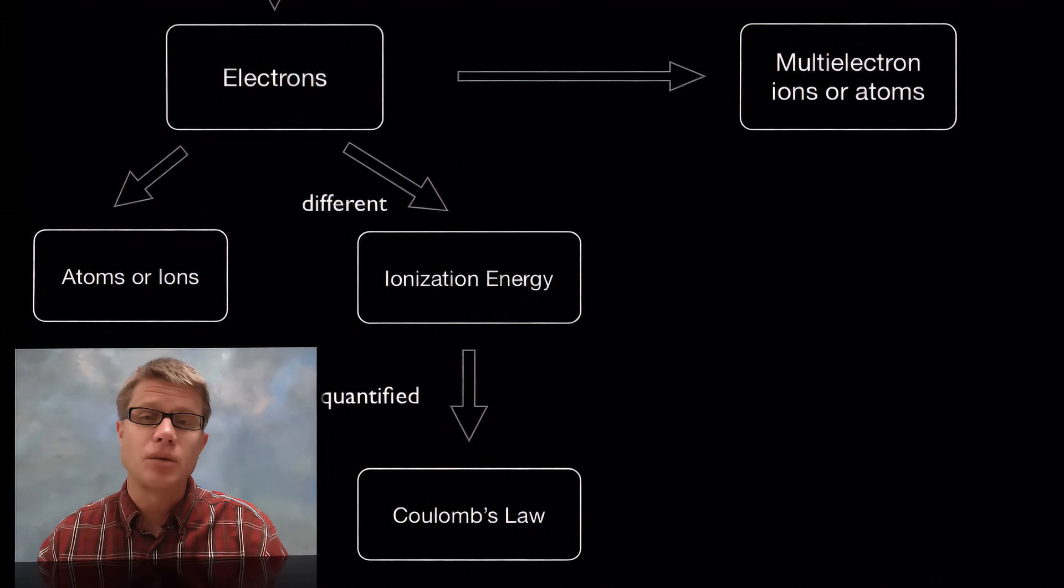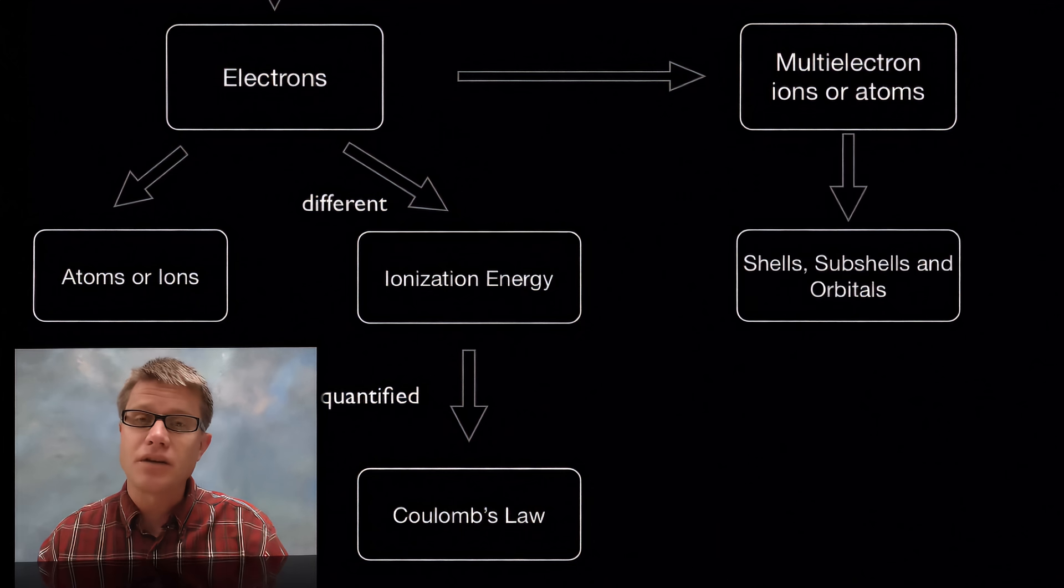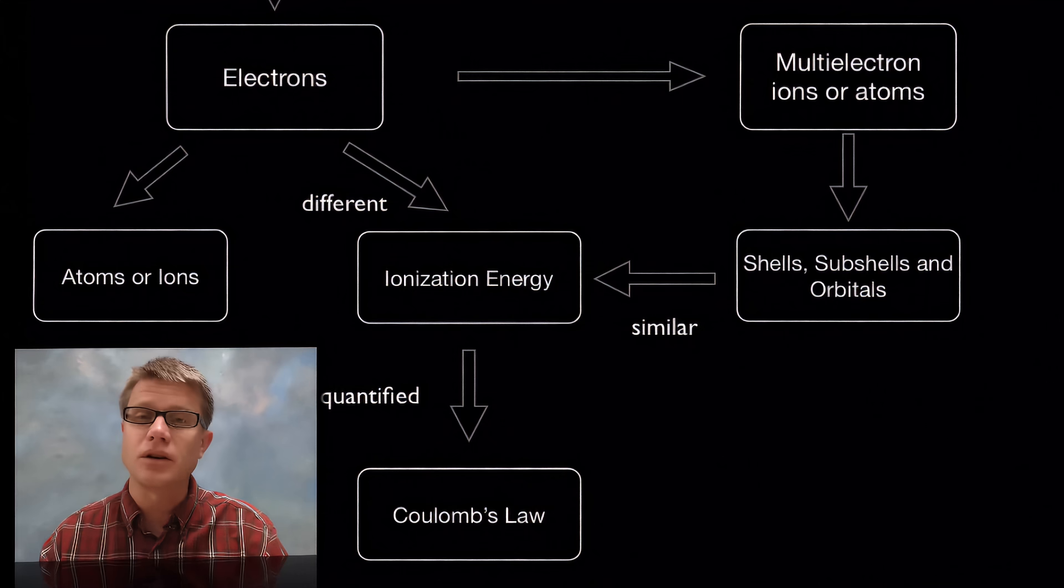Because in most atoms they're going to be multi electron. They have many electrons. And what we'll find is they're going to be organized into shells, subshells and then orbitals. And all of those are going to have similar ionization energy. And there's a chart on ionization energy that's the most important one.